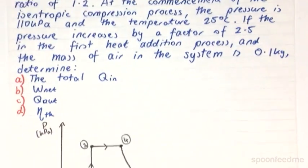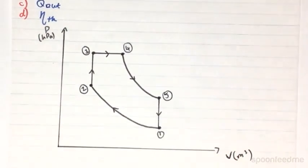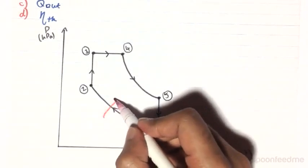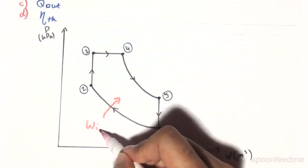So if we look back at the PV diagram of the dual cycle, we have our isentropic compression process 1-2. So that is going to be work into the system.